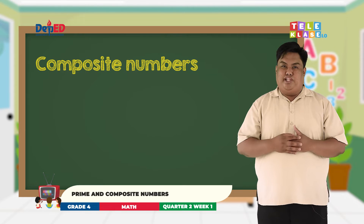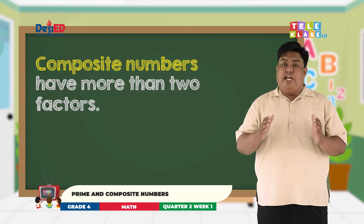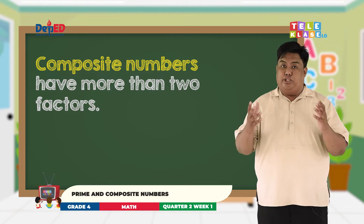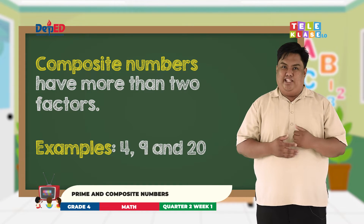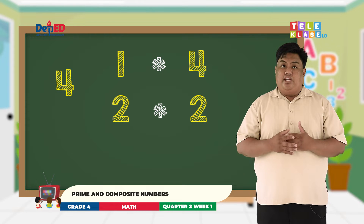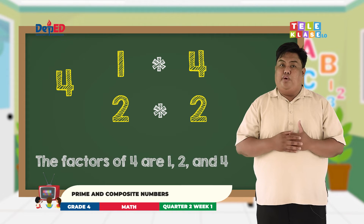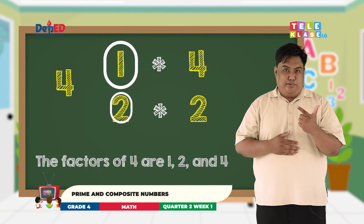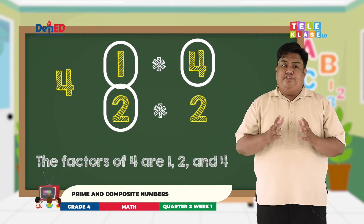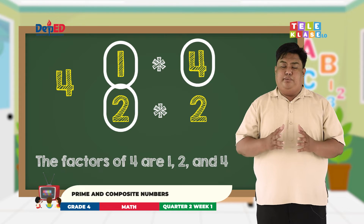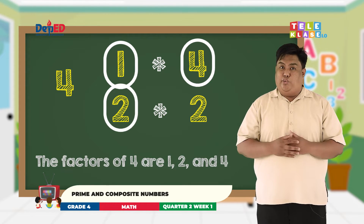Now how about composite numbers? Composite numbers are numbers that have more than 2 factors. Examples are 4, 9, and 20. Now let's take 4. The factors of 4 are 1, 2, and 4. Now remember that if the factors of the number are the same, you only need to write it once.